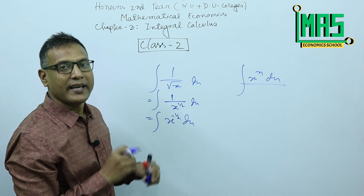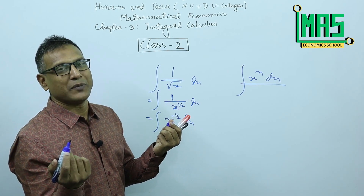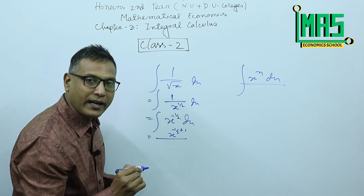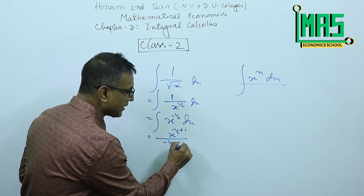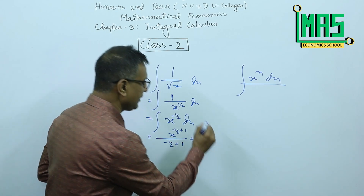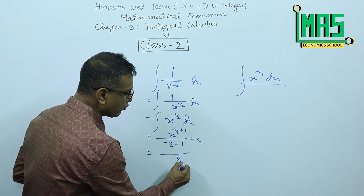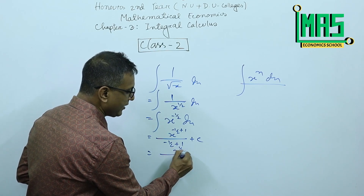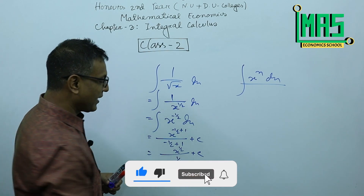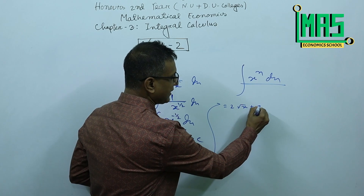The formula for integration of x to the power n dx applies here. We consider x to the power minus 1 by 2. Starting to apply: x to the power minus 1 by 2, adding 1 to the power gives us x to the power 1 by 2, divided by 1 by 2. So the result is 2 root x plus c.